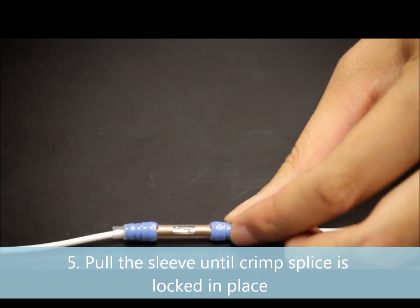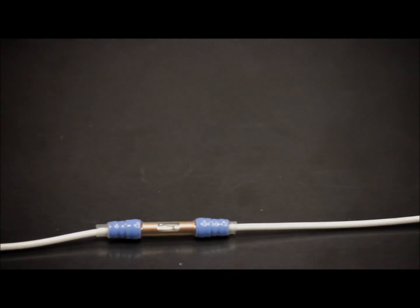Pull the insulation sleeve until the crimp splice is locked. You have now successfully repaired your damaged wire without a heat gun and within two minutes. This is our new heatless crimp splice.